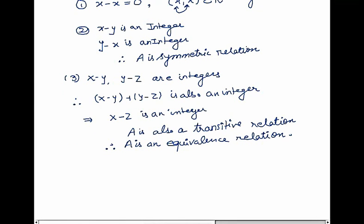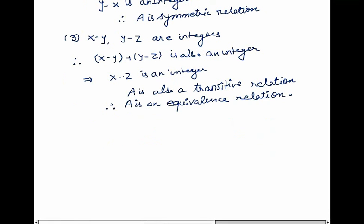Now let us check whether B is an equivalence relation or not. The statement for B says that x/y equals alpha, where alpha is a rational number.